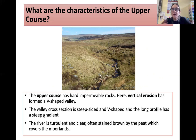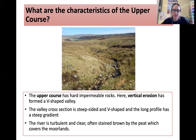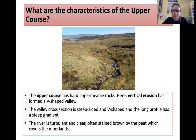This is very characteristic of an upper course river: a very small channel. You can see the angular, large rocks and very low discharge. You can also see those interlocking spurs and how the river winds its way around them.